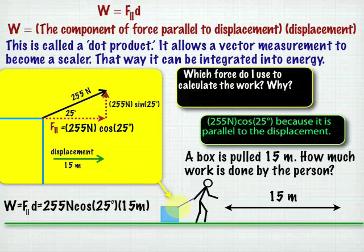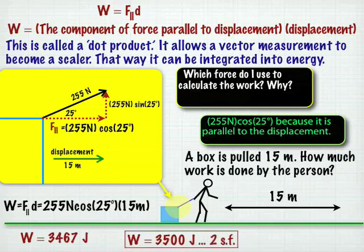So now I know that the work is equal to F parallel times d. That's 255 newtons cosine 25 times 15 meters. So when you do the math, you get the work to equal 3,467 joules.